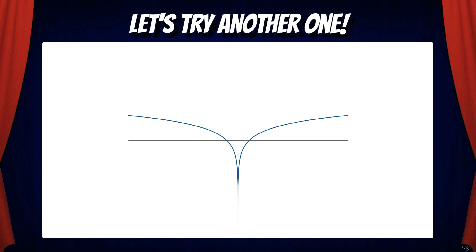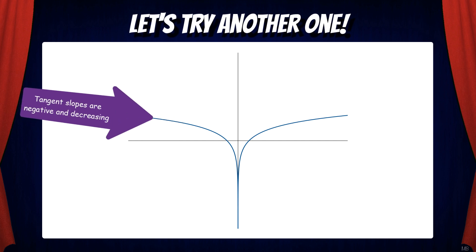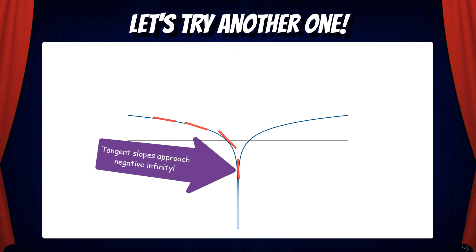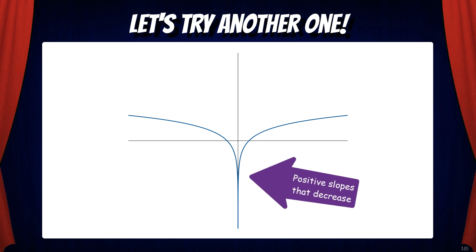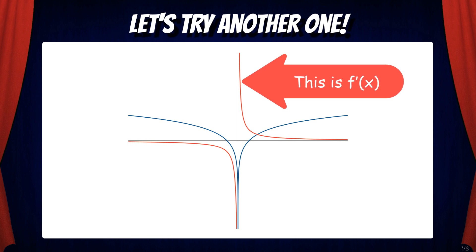Let's try another one. Here's the graph of a function f, and we want to draw the derivative. Starting from the left, we can see that the tangent slopes are negative and decreasing. In fact, the tangent slopes approach negative infinity. Then on the right, we can see that the slope starts very positive but decreases. And now here's the derivative function shown in red.